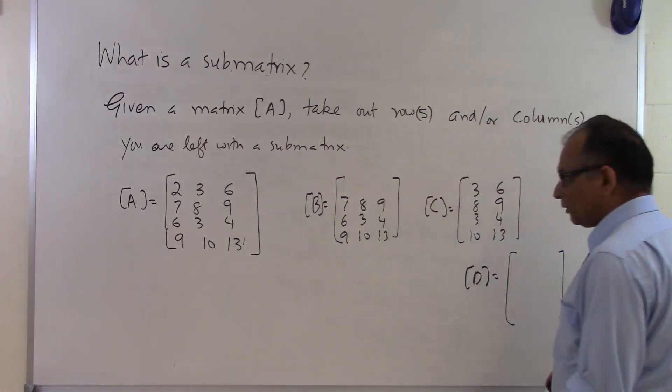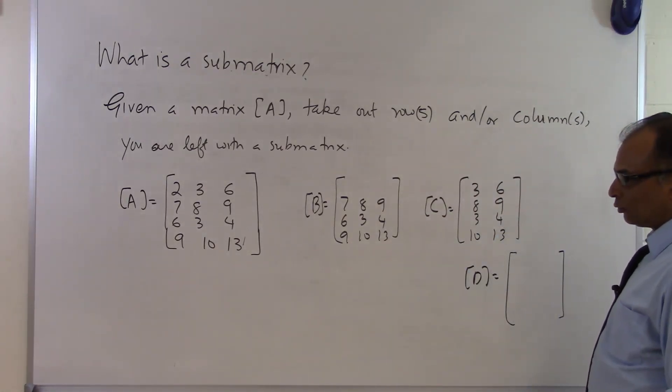So the submatrix for taking the first two columns out and the first row out would be 9, 4 and 13.